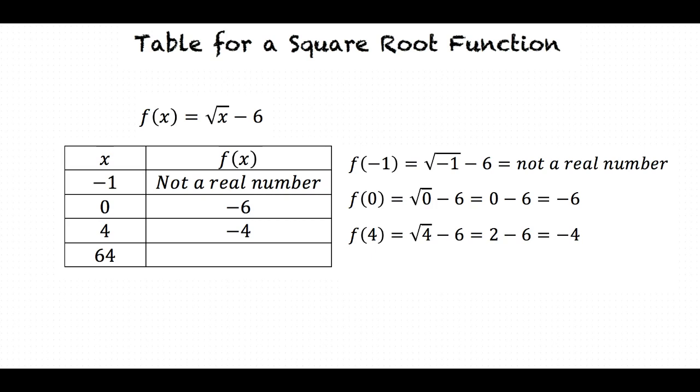Now let's solve f(64). f(64) is equal to the square root of 64 minus 6. The square root of 64 is 8, so this simplifies to 8 minus 6. 8 minus 6 equals 2. So our last value, f(64), in the right-hand column of the table is 2.